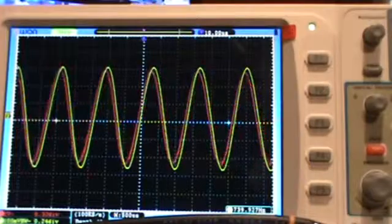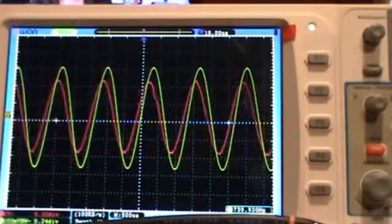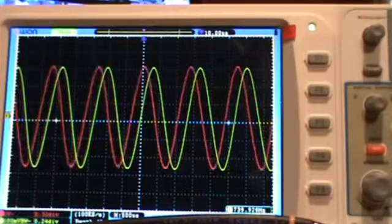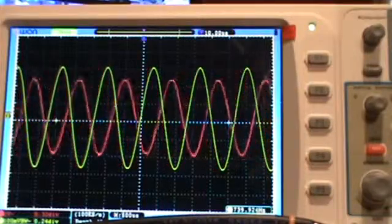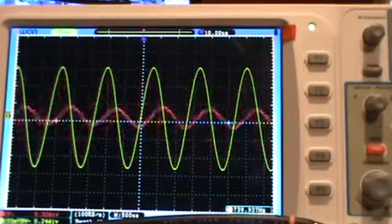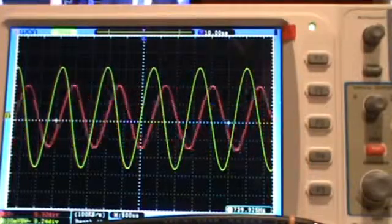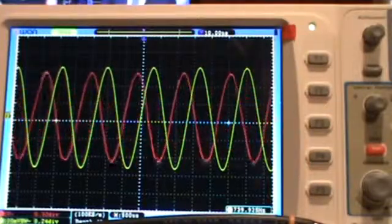When the channel 1 red trace is moving to the right we have our frequency tuned too high and when it's moving to the left we have our frequency tuned too low. So in this manner we can determine the frequency of an unknown signal.